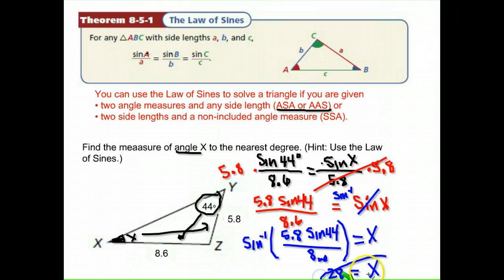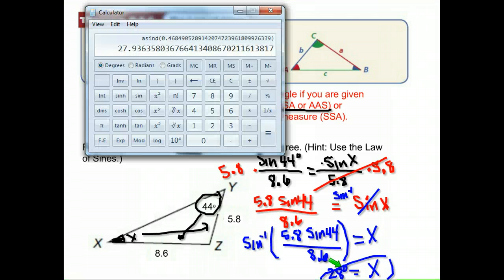So a lot of calculator work there. Be really careful. So again, we did the sine of 44 times 5.8. You have to use order of operations here. Then we divided by our 8.6, got that number, and then did the inverse sine. And that gave us 28 degrees as our answer.